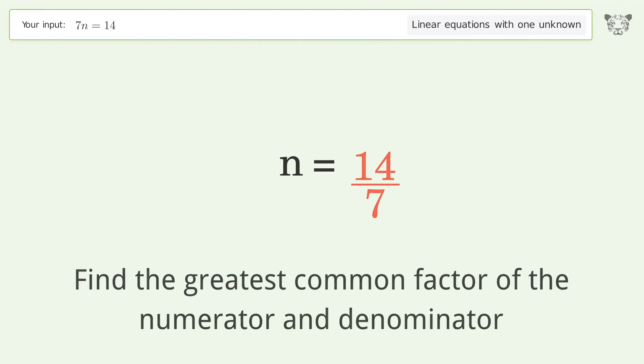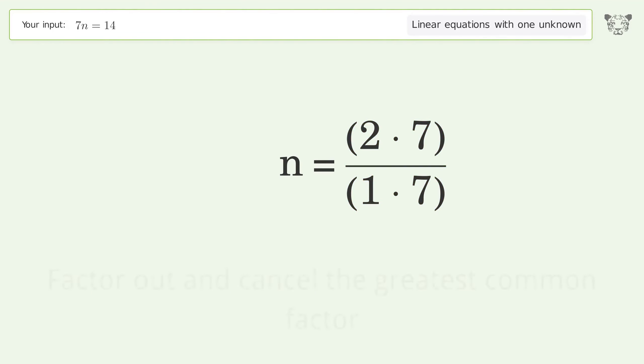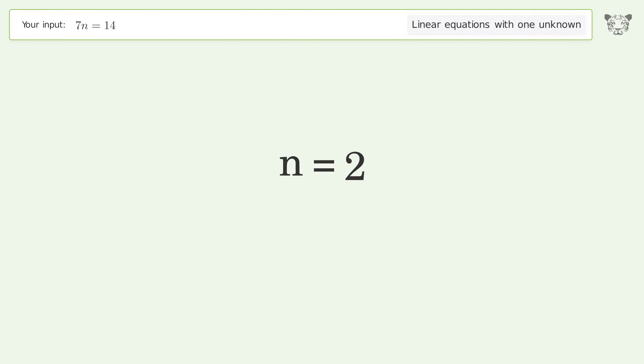Find the greatest common factor of the numerator and denominator. Factor out and cancel the greatest common factor. And so the final result is n equals 2.